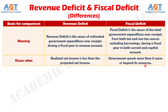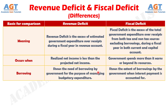Number 3: Revenue deficit shows the need for borrowing by the government to manage budgetary expenditure, whereas fiscal deficit shows the extent of borrowings by the government when an interest payment is accounted for.